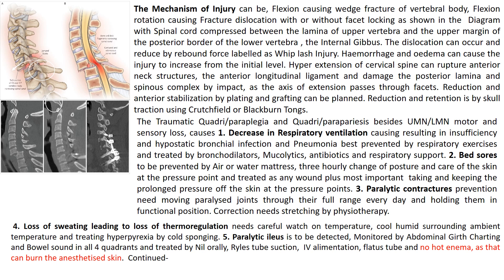Paralytic ileus is to be detected and monitored by abdominal girth charting; bowel sounds are heard in all four quadrants. Paralytic ileus is treated by nil orally, calcium pantothenate injections, Ryle's tube suction, IV alimentation, and flatus tube. You do not use hot enema as that can burn the anesthetized skin.